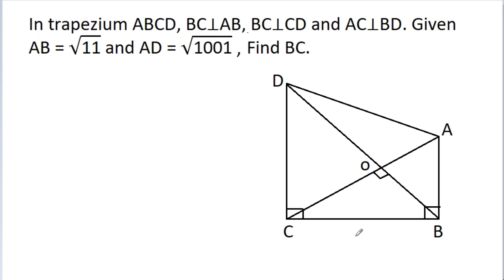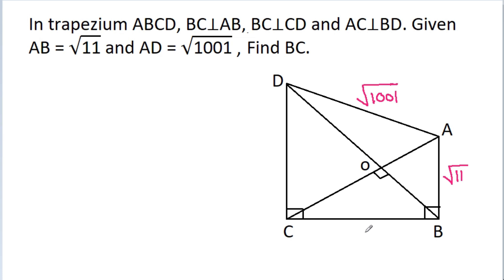In this video, we have given a trapezium ABCD such that BC is perpendicular to AB and BC is perpendicular to CD, and AC is perpendicular to BD. AB is equal to √11 and AD is equal to √1001. We have to find BC, so suppose BC is equal to x.